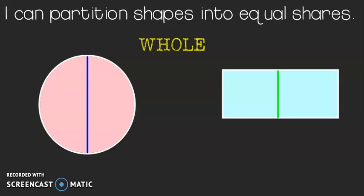All right, in this lesson we are going to partition shapes into equal shares. Look at the word partition. I see the word part here. That's a big clue. In other words, we're going to be cutting up these shapes into parts, and in this case we're going to make sure that they're equal.